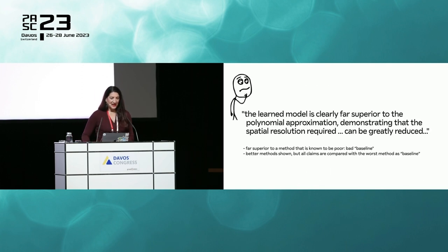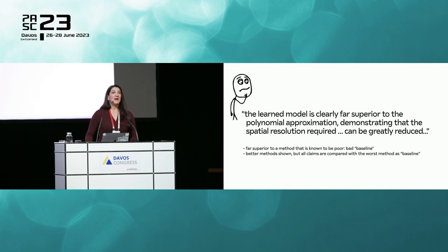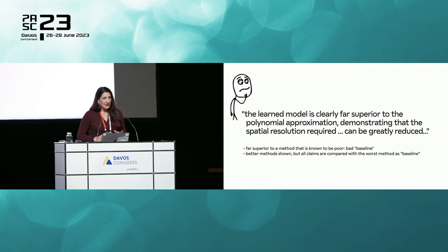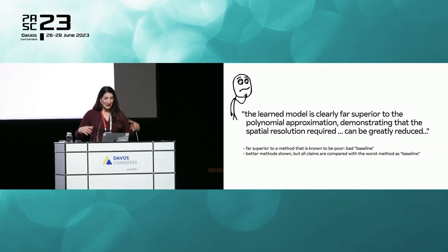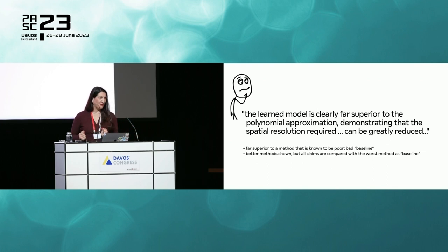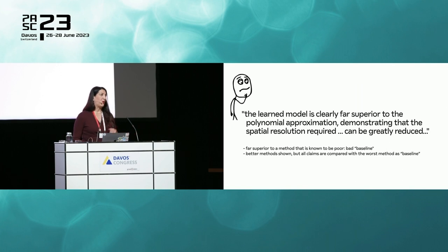Here's another quote: 'The learned model is clearly far superior to polynomial approximation, demonstrating that the spatial resolution required can be greatly reduced.' I have questions. 'Far superior' to polynomial approximation — when you look at the context, polynomial approximation is a poor method to solve that particular problem. It's just a bad baseline. Better methods were shown in the paper's results, but all the claims compare against the worst method as baseline. That is disappointing.